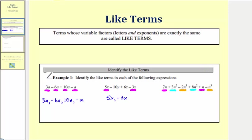So we have three pairs of like terms: 7n and n are like terms, and 3n squared and 8n squared are like terms.